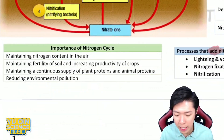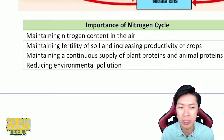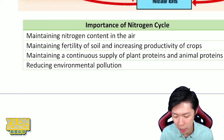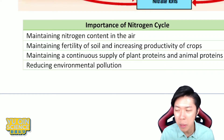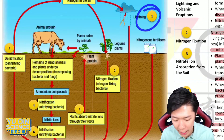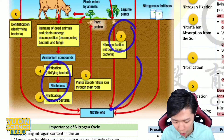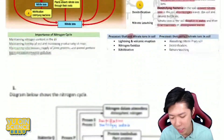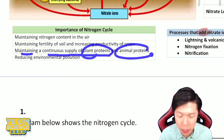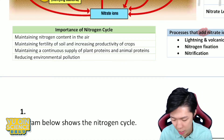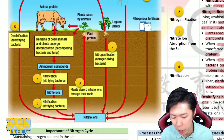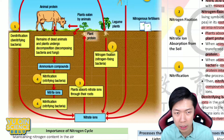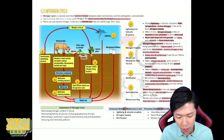The importance of the nitrogen cycle: number one, to maintain nitrogen content in the air — all cycles work the same way. Number two, to maintain fertility of the soil because we need nitrate. Number three, to increase productivity of crops — though in practice, plantations usually use fertilizer because waiting for lightning or nitrogen fixation is too slow. Number four, to maintain a continuous supply of plant protein. Number five, to reduce environmental pollution by recycling nitrogen naturally.